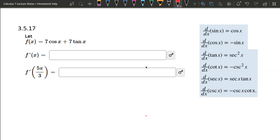We're going to look at problem 3.5.17, and this is a derivative of a trig function. We have a constant times a trig function plus another constant times a trig function.